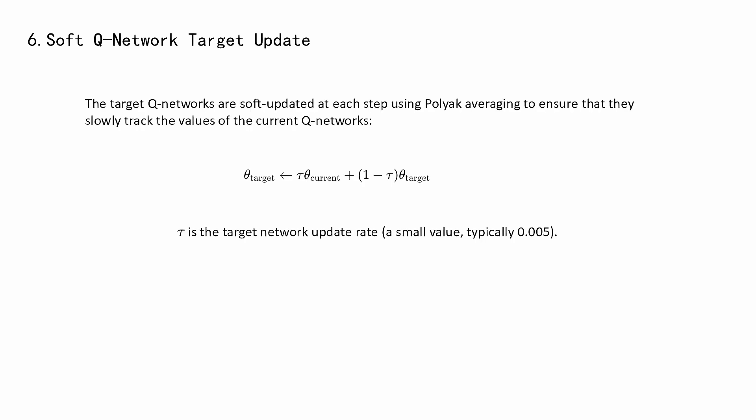Soft Q Network Target Update: The target Q networks are soft updated at each step using Polyak averaging to ensure that they slowly track the values of the current Q networks. Tau is the target network update rate, a small value, typically 0.005.